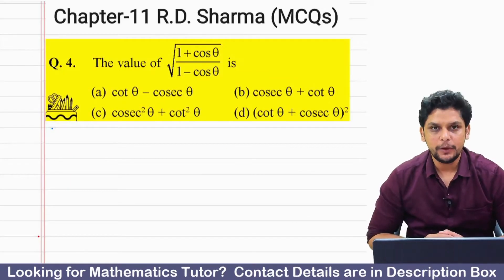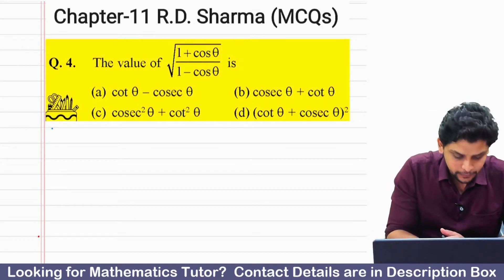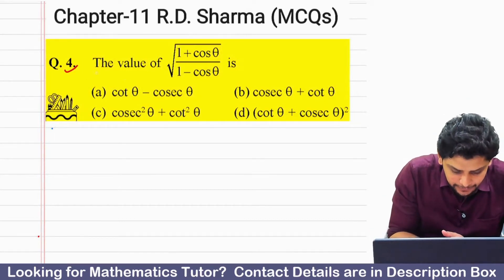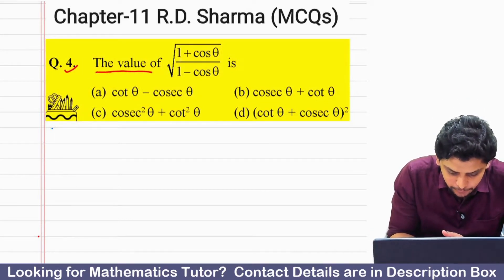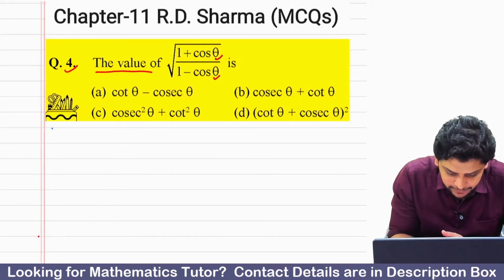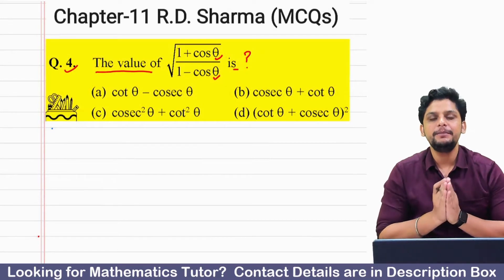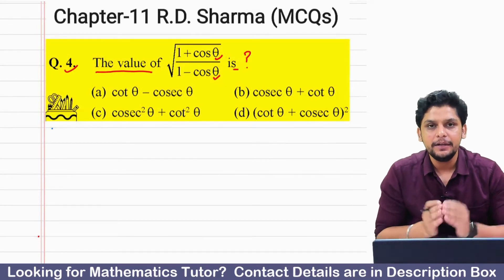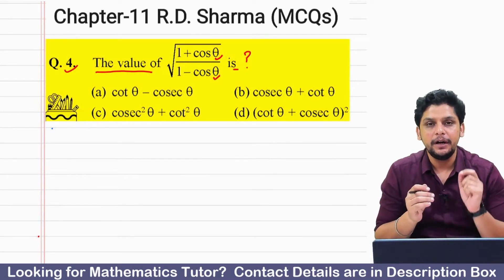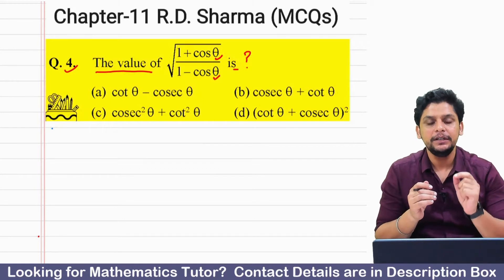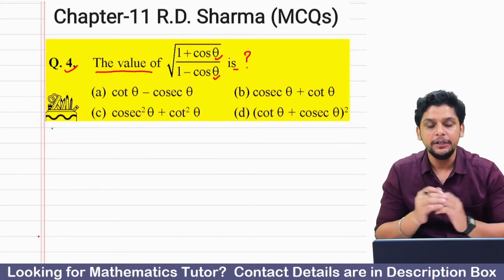So this is the question. Question 4: the value of under root of (1 plus cos theta) divided by (1 minus cos theta) is. So basically what we have in this question is the expression under root of (1 plus cos theta) divided by (1 minus cos theta).